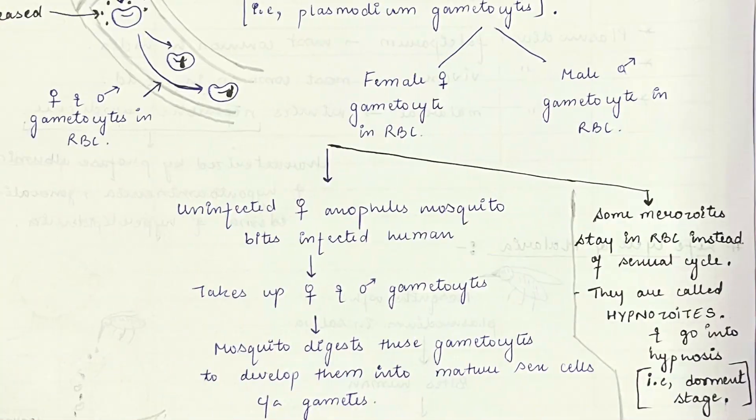And after that, it will eventually lead to death. After several asexual multiplications of merozoites, some merozoites will go through the sexual cycle. But some merozoites won't go into the sexual cycle and will stay inside the RBC. Those merozoites will be called hypnozoites. They will go into a dormant stage — meaning they won't do anything basically. The dormant stage is called hypnosis, and hypnozoites will stay in hypnosis.